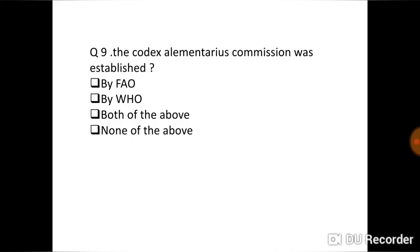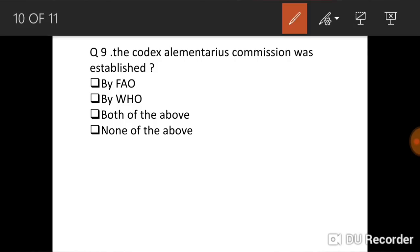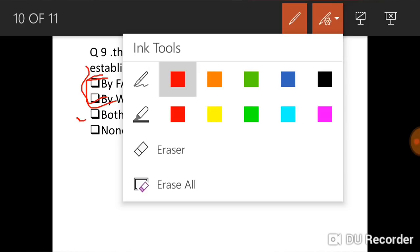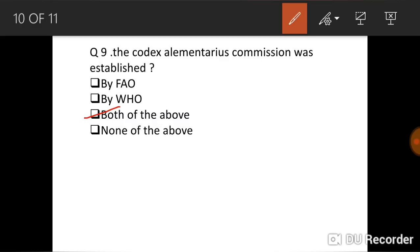The Codex Alimentarius Commission, meant CAC, was established by whom? So it is established by both FAO and WHO, World Health Organization and Food and Agriculture Organization. So CAC is established by both FAO and WHO. So its correct answer is C, meant both of the above. So both are involved in establishing CAC.